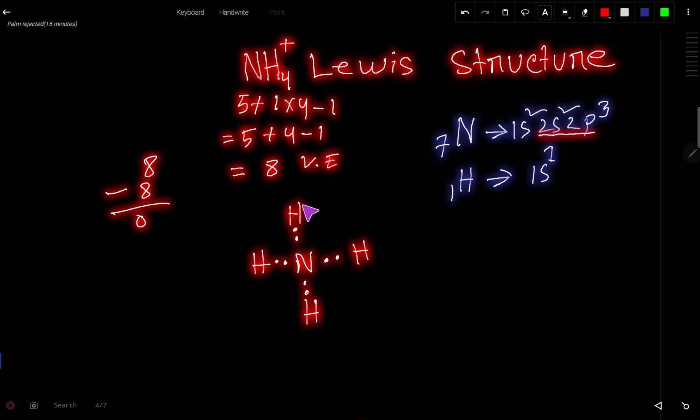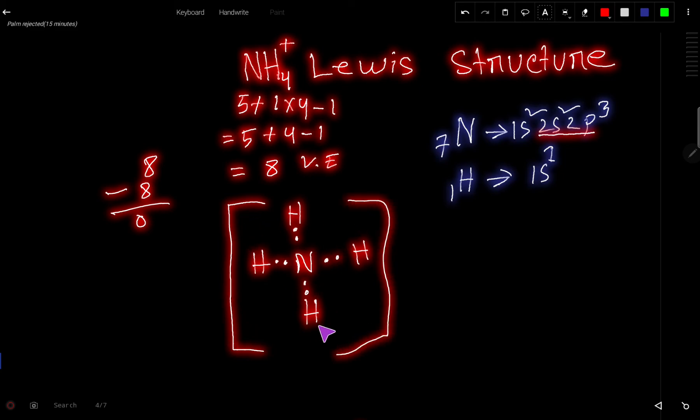But one thing you have to remember: here you have a plus charge, right? So to show that this is an ion, you have to place brackets, then you have to put this charge here. So this is the Lewis dot structure for NH4+. You can express these bond pairs as dashes. Look here.